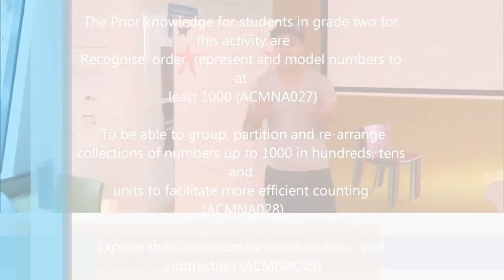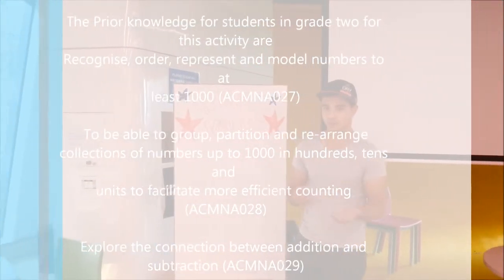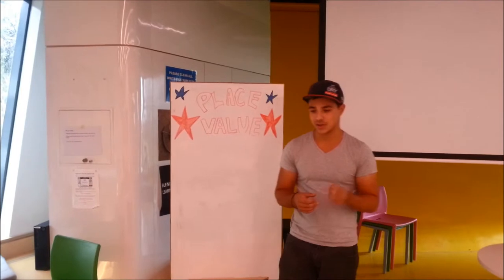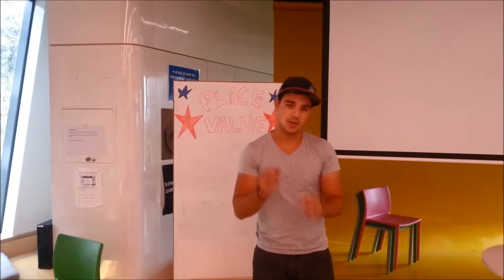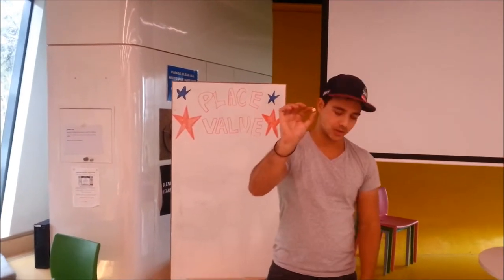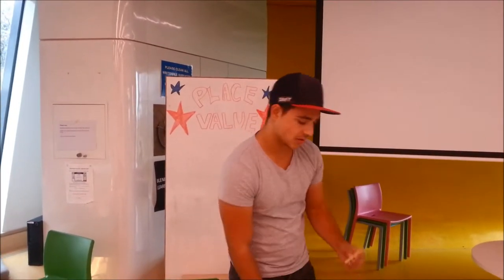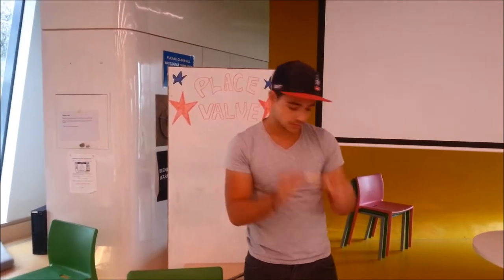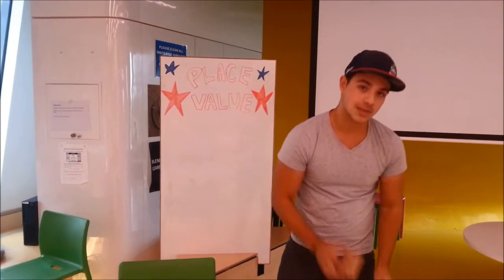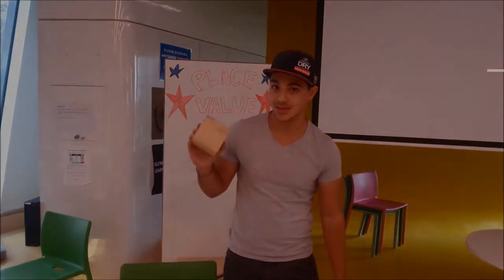One way to perform addition using place value is by using these little MAB blocks. This little one here represents the units. This block here, as you can see, has 10 units, so it's a 10. And then this one's 100, and this one's 1,000.